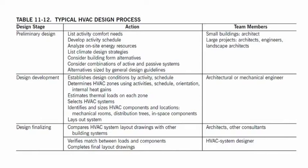Actions in this stage include establishing design conditions by activity and schedule, determining HVAC zones using activities, schedule, orientation, and internal heat gains, estimating thermal loads on each zone, selecting HVAC systems, identifying and sizing HVAC components and locations — mechanical rooms, distribution trees, in-space components — and laying out the system.